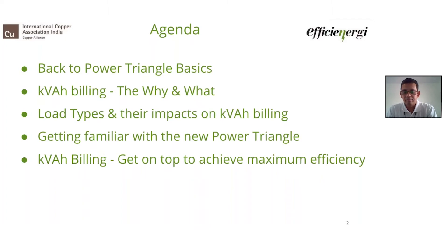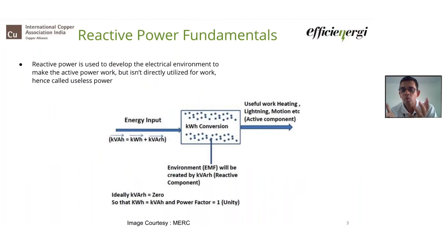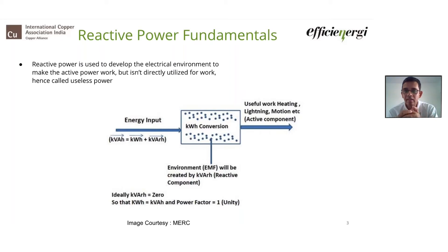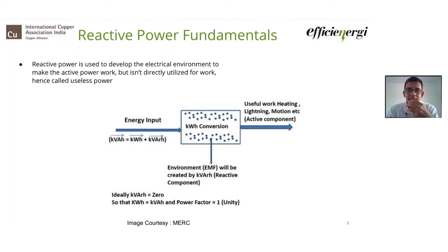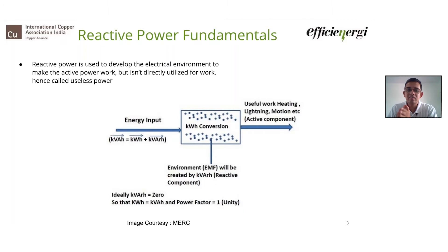Going back to electrical engineering 101 — or reactive power 101 — very simply, whenever energy is taken by any machine, motor, or load, there is a certain element of work that needs to be done. But at the same time, there is additional lossy work which is lost in the form of reactive power — a magnetizing current — which is the non-active part of the power triangle. You have to provide this to the load for it to function properly.